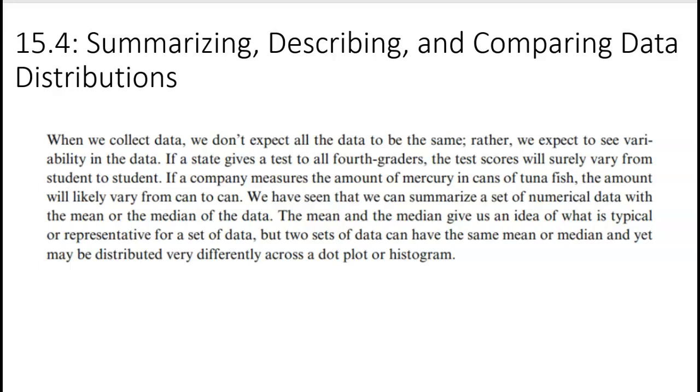For example, they could be really close together with a lot of dots in one place, or they could be really spread out. That's what we're talking about when we talk about variability - how consistent or close together the data is, or how spread out or far apart the data is.